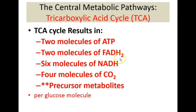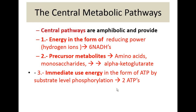The result of the TCA or Krebs cycle is two molecules of ATP per glucose, two molecules of FADH2 per glucose, six molecules of NADH per glucose, four molecules of CO2 per glucose, plus precursor metabolites that can be used to make amino acids. As a central metabolic pathway, the TCA is also amphibolic. As a catabolic pathway, it provides energy in the form of reducing power — six NADHs gathered from two pyruvates, which created two acetyl coenzyme A's, each going through the cycle once.